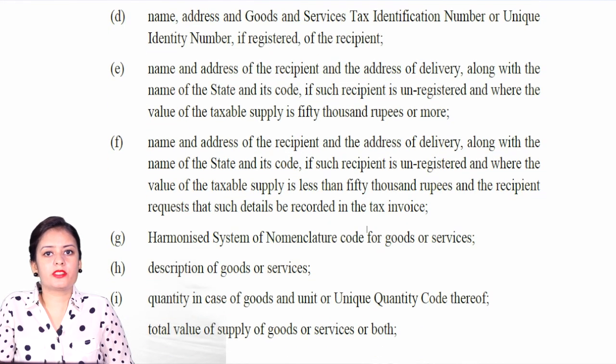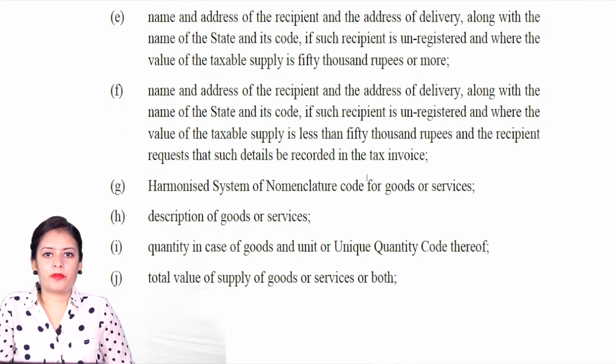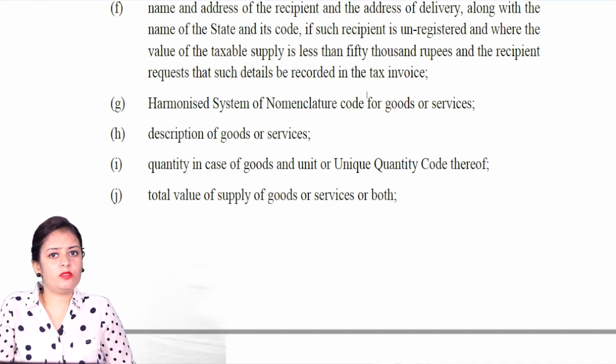If you were registered under service tax, then all your branches used to have a common invoice and you had a centralized service tax number. But in GST, you have to understand that if you have 3 or 4 branches, then each branch must have a different invoice — their invoice format is different and each branch has its own GST invoice number.